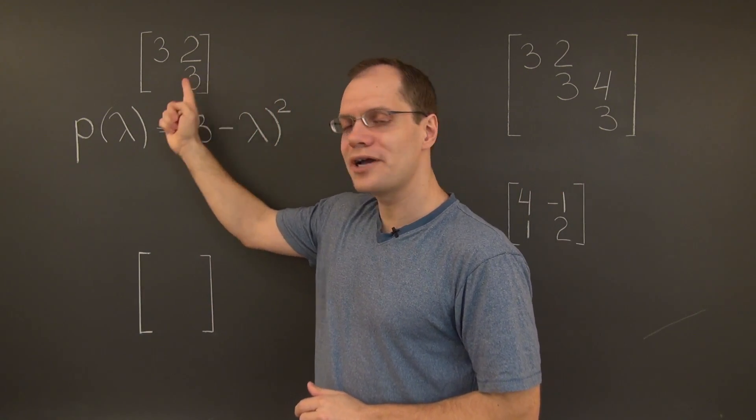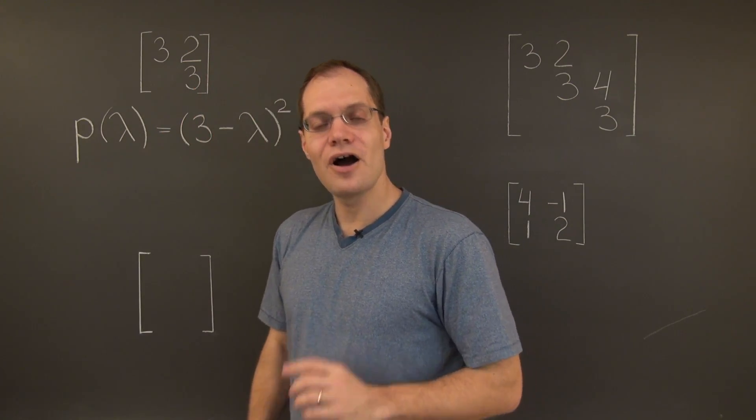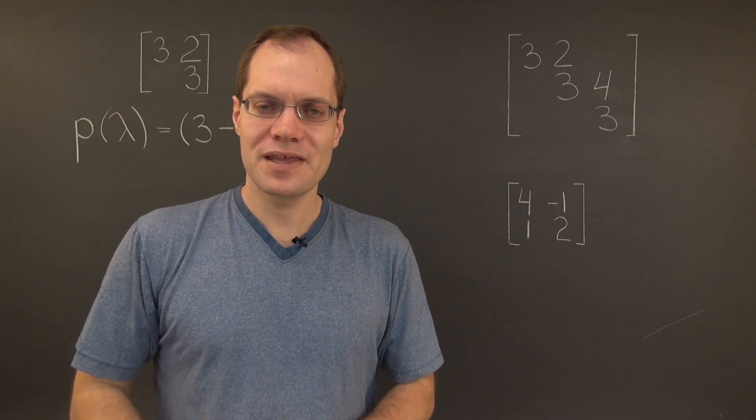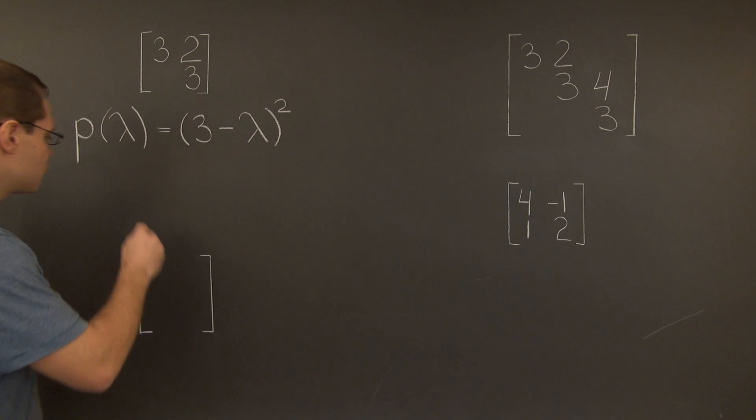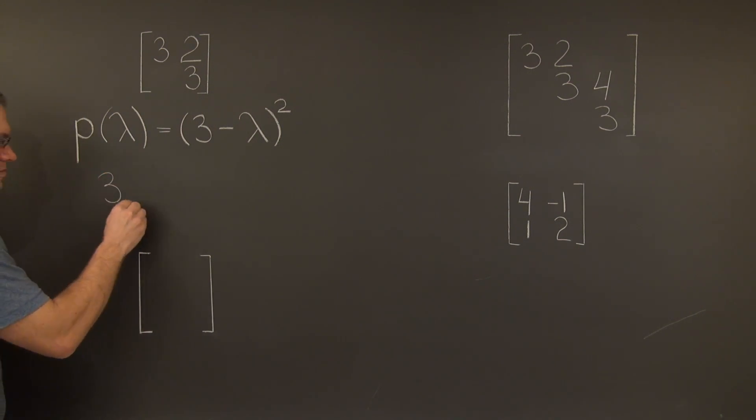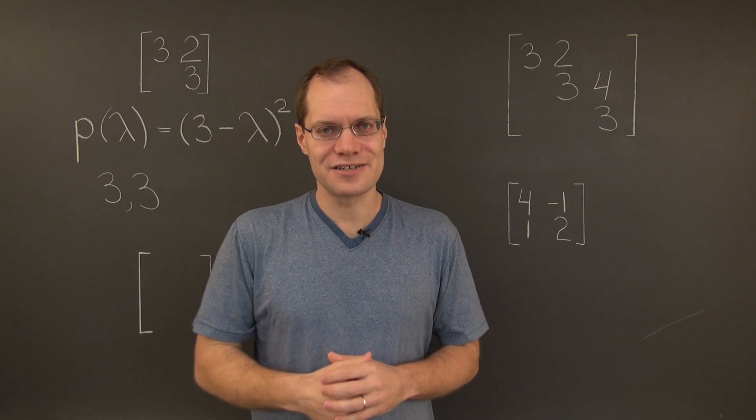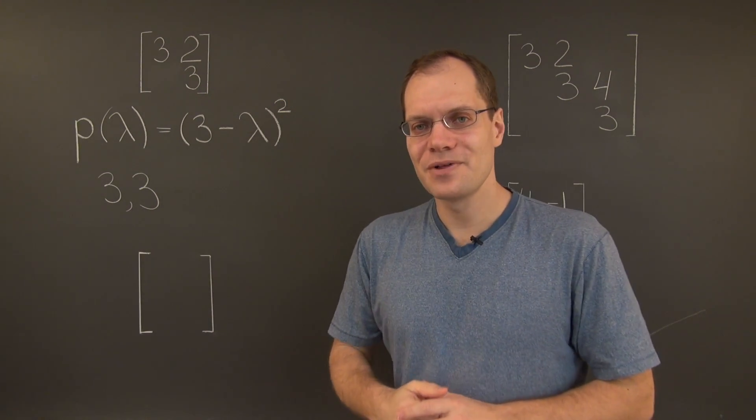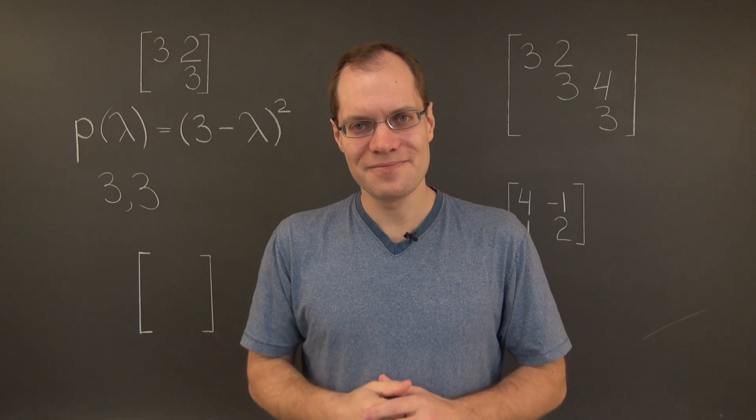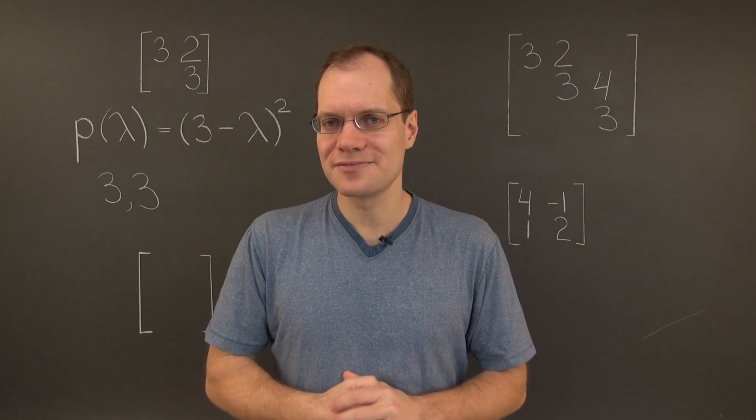Back to this matrix. The algebraic multiplicity of the eigenvalue 3 is 2. So we count 3 twice. Now, what's the corresponding eigenvector? More interestingly, what's the dimension of the corresponding eigenspace?